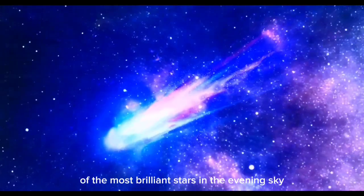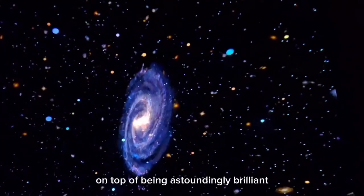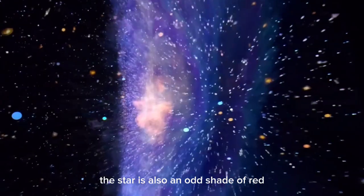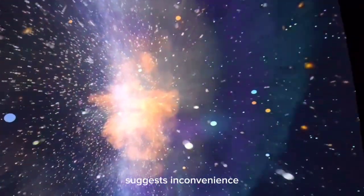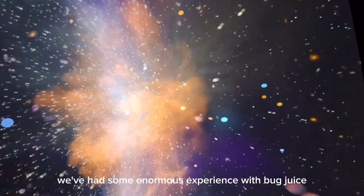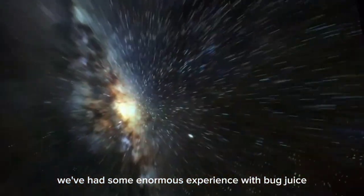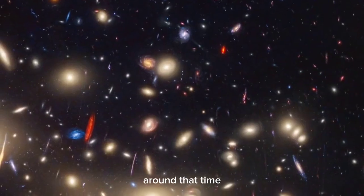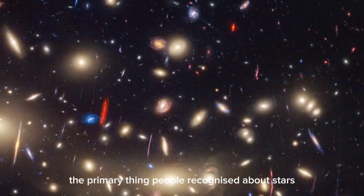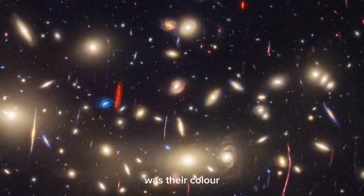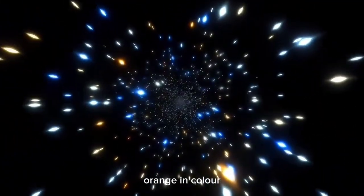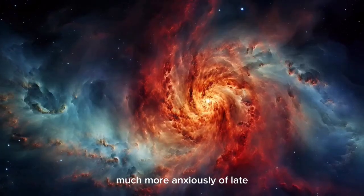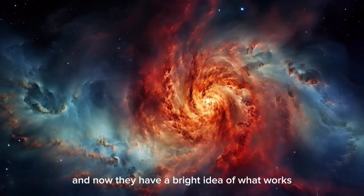It is the second largest star in the star group, and its name comes from this element, the Beast Shoulder. It is maybe one of the most brilliant stars in the evening sky. On top of being astoundingly brilliant, the star is also an odd shade of red, which suggests inconvenience. We've had some enormous experience with bug juice for quite a while. A Greek monitor named TMY2 zeroed in on it. Around that time, the primary thing people recognized about stars was their color.